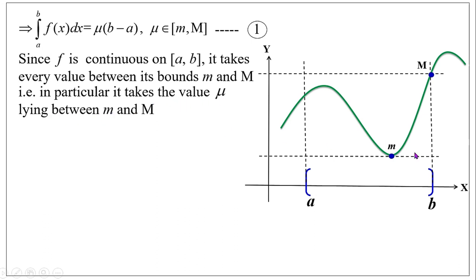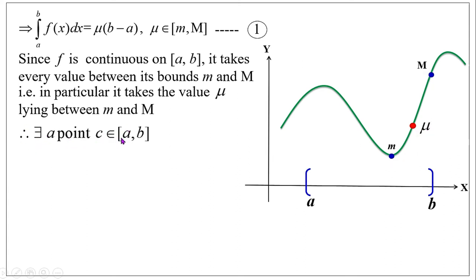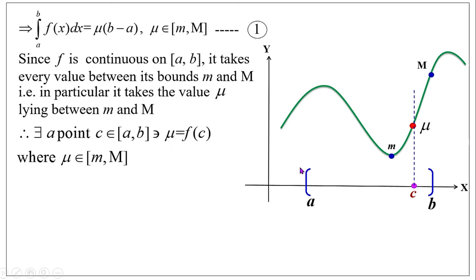In particular, the function f takes the value μ lying between small m and capital M. We consider μ as a point on the y-axis. Therefore, there exists a point c in the closed interval [a, b] — c can be anywhere from A to B — such that μ equals f(c). Thus there exists a point C in the closed interval [a, b] such that μ equals f(c). Let us call this equation number 2.